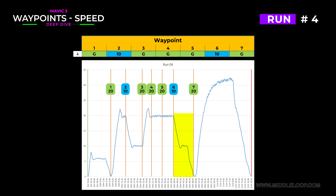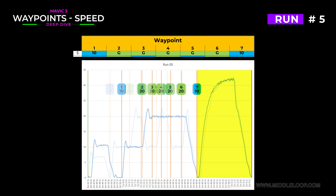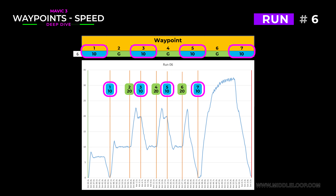On to run number 5: here we have waypoints 1 and 7 set to 10 miles per hour, and this is looking pretty consistent. It goes to the speed set after passing the waypoint, except the last waypoint which it totally ignores. Run number 6 has waypoints 1, 3, 5, and 7 set to 10 miles per hour, confirming the pattern as we now know it.